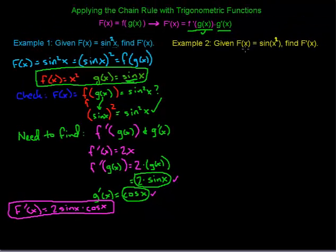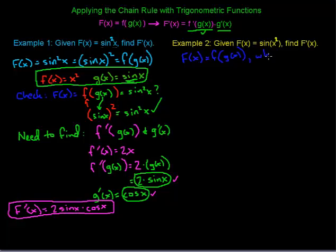In the second example, we have f of x equals sine of x squared, where the angle is now squared, not the trig function. We have capital F of x equals f of g of x, where little f of x is the sine of x, and little g of x is x squared. That can be verified by going through the same exercise we did in the first example.